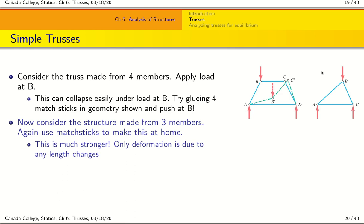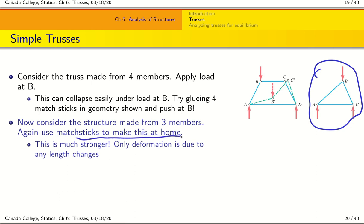On the other hand, if you think about a triangular truss structure made up of only three members, when you apply the force at B it's much harder to deform the structure. This is why trusses are typically triangular in shape and why the triangle is one of the most basic load-bearing shapes you will see all around you. You can try this at home — take matchsticks, glue them together, and compare these two shapes in terms of the load needed to break the structure.